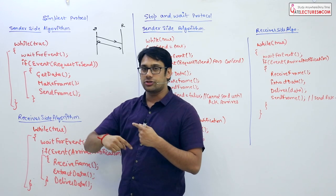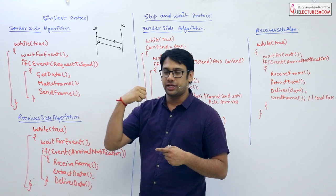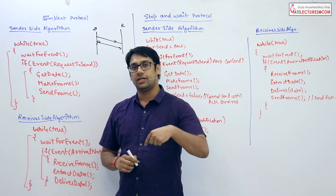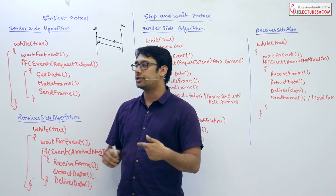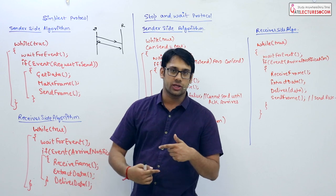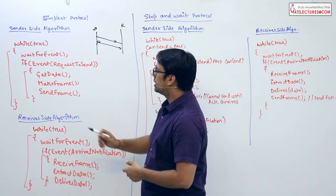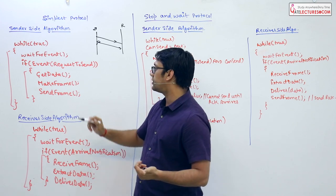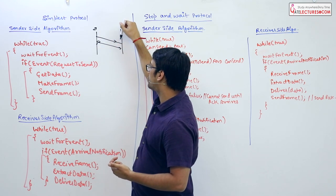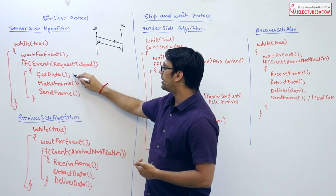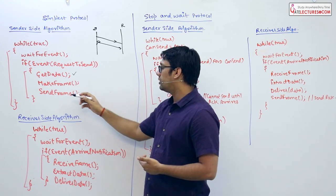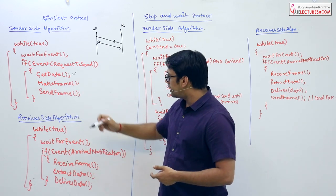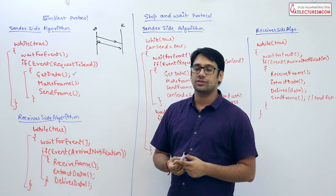While-true means this condition is always true — we are constantly checking if there is data to send. This while loop will always run and keeps checking if you have some data to send. While true: wait for an event. If that event is a request to send data — that is, if the event on the sender side says we are requesting to send data to the receiver — then get that data from the network layer to the data link layer, make the frames, and then send the data to the receiver. The key steps are get data and make frame.